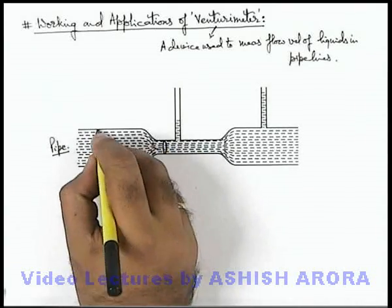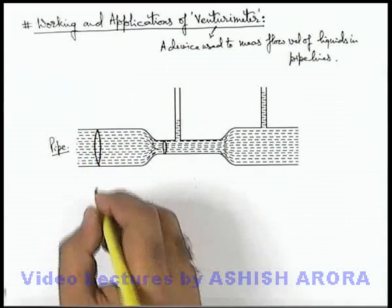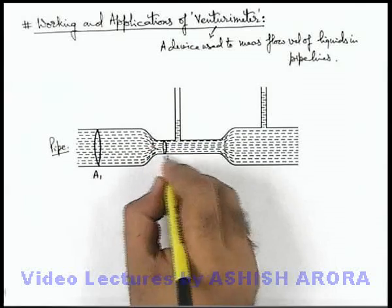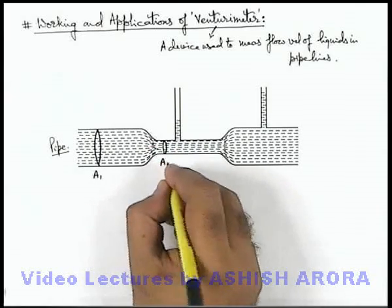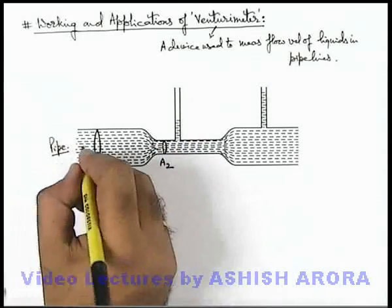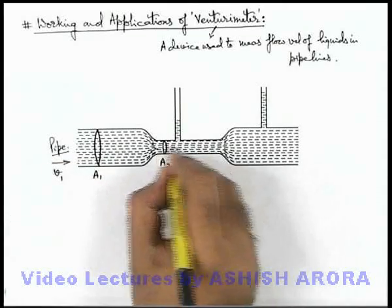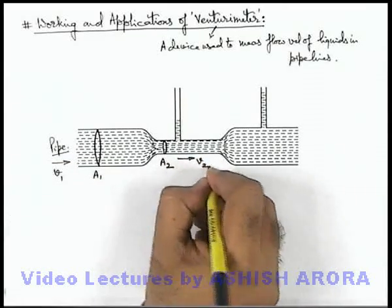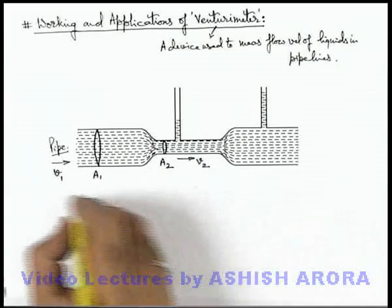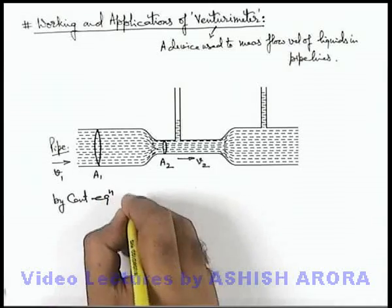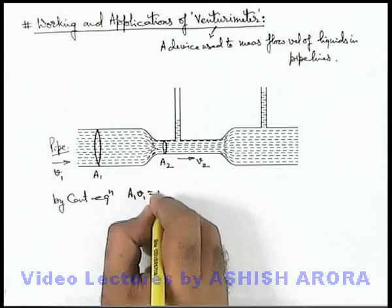The pipe in which the fluid is flowing is having a cross sectional area A1 and it is connected to a narrow constriction where cross sectional area is A2. Then obviously if the flow velocity of liquid in pipe is v1, in the constriction its flow velocity changes to v2. And by continuity equation we can write that A1 v1 is equal to A2 v2.